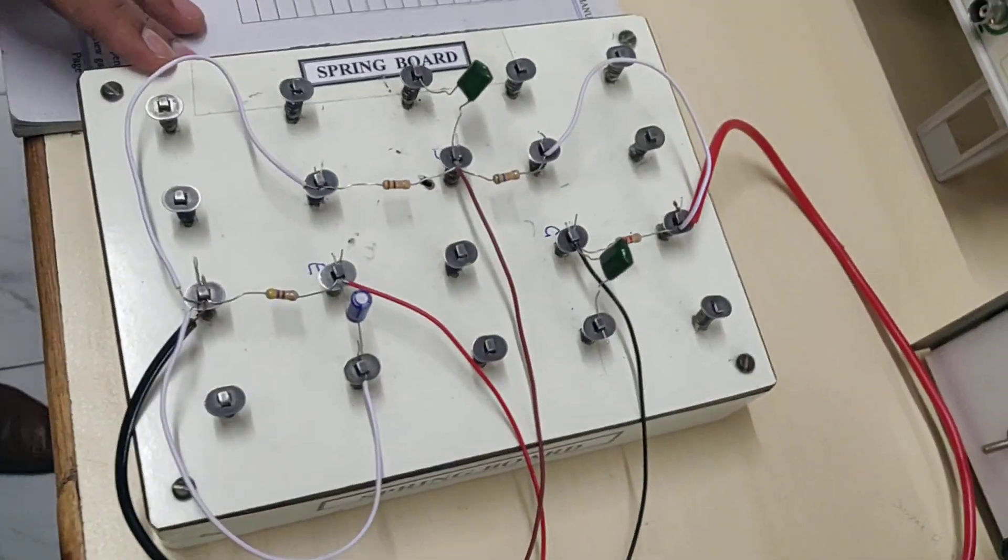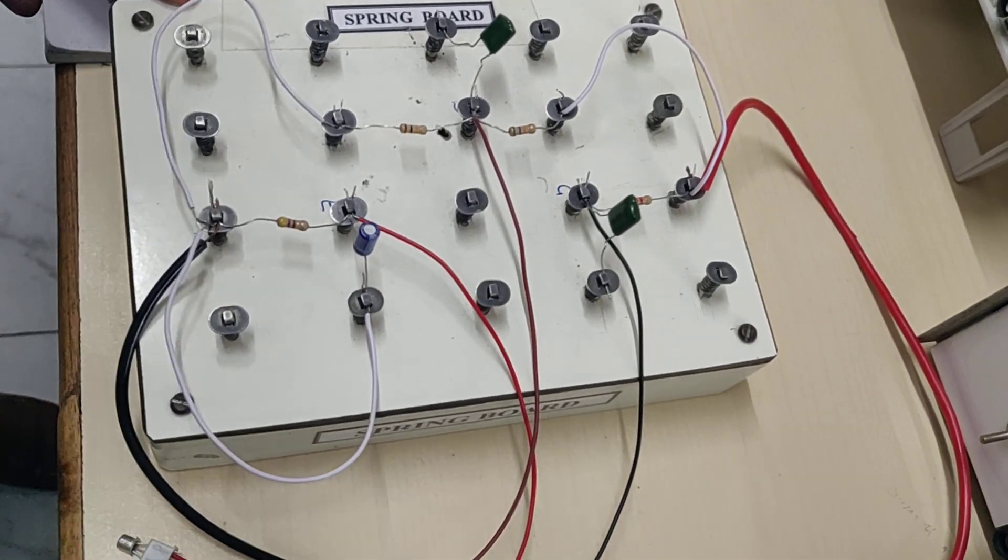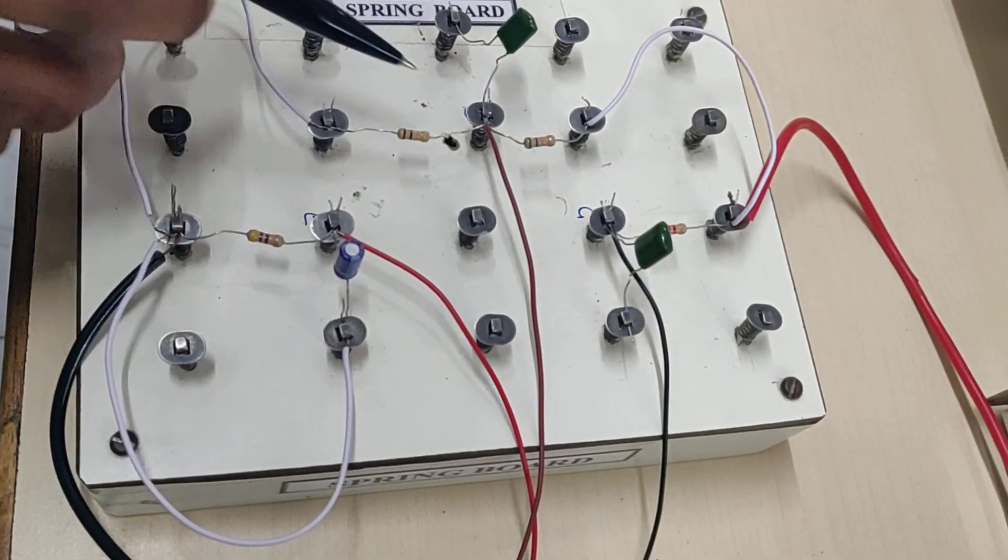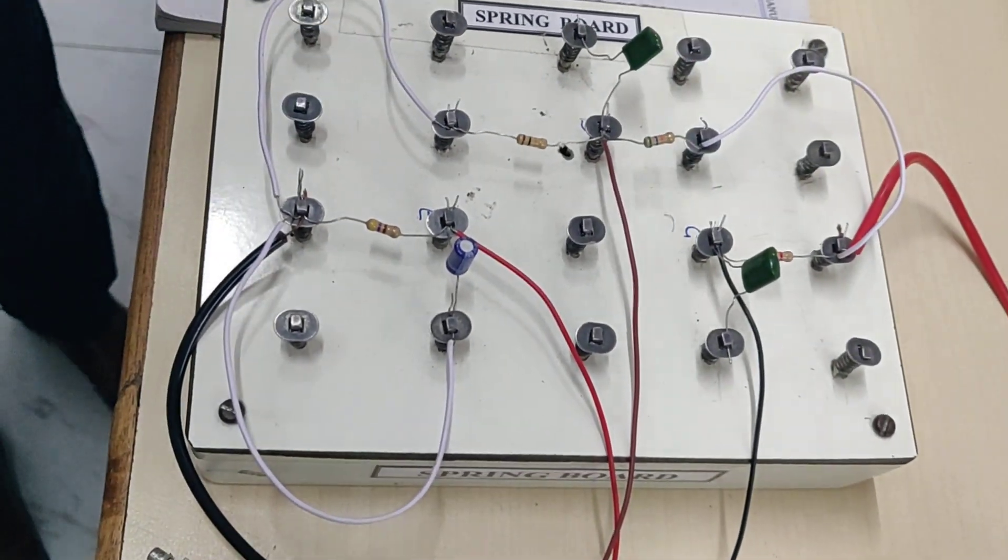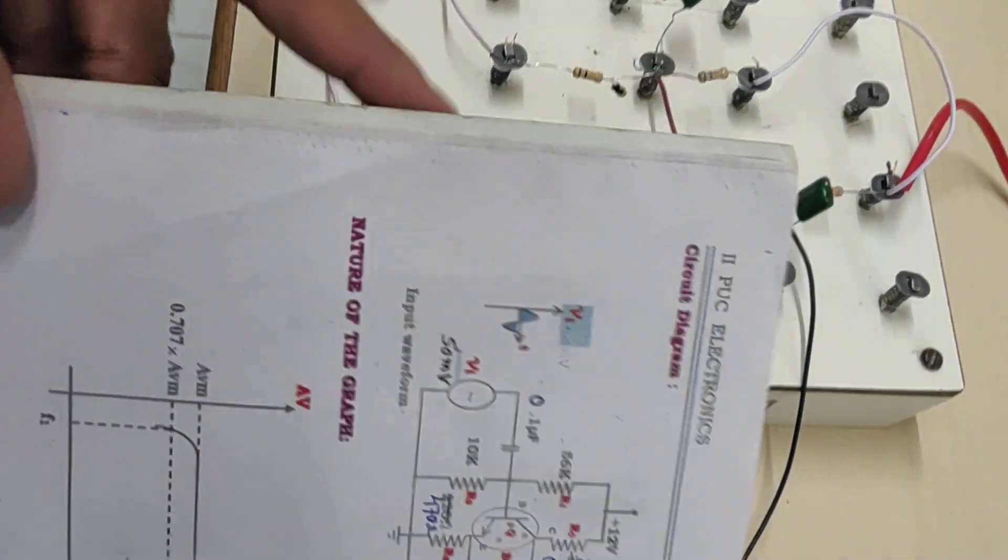Please come to the springboard. Now we are using the springboard. Here we have marked emitter, base, and collector. We have rigged up the circuit as per the circuit diagram.